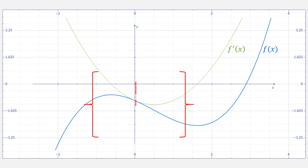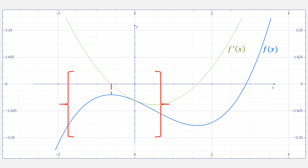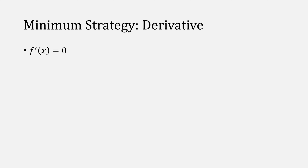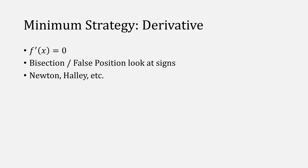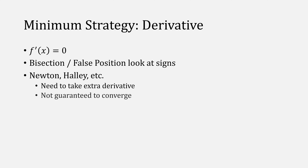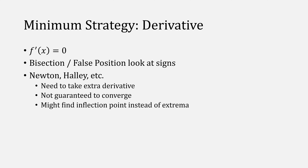Conversely, when the derivative goes from positive to negative, that's a maximum. When you know the derivative, you might just try to find where that derivative is zero — you might apply a bisection or false position method looking at the signs. Otherwise, you might try Newton's method, Halley's method, or the Secant method, but note that these require taking an extra derivative and they're also not guaranteed to converge. You also might find some other inflection point instead of an extremum like a minimum or a maximum.